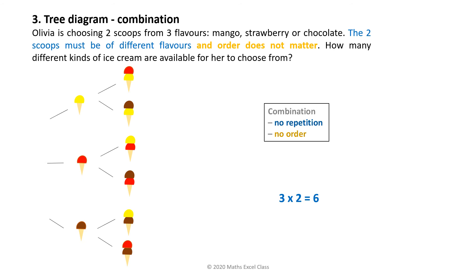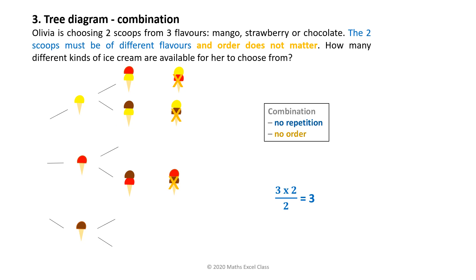However, order does not matter. Mango-strawberry is considered the same as strawberry-mango, so it is not counted as a separate choice. Similarly, mango-chocolate is the same as chocolate-mango, and strawberry-chocolate will not be counted either. So instead of six, we have two arrangements for each selection, so we divide six by two. Three times two divided by two — Olivia is left with three choices for her ice cream.